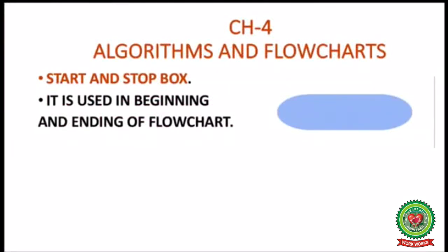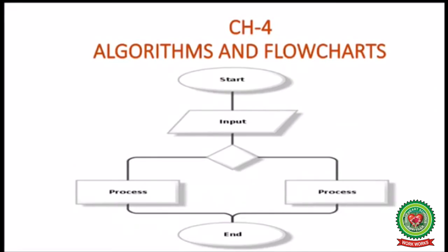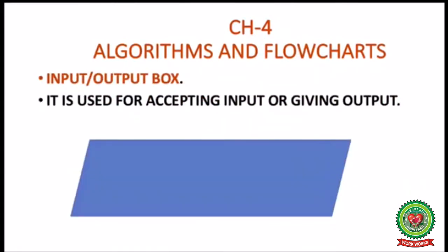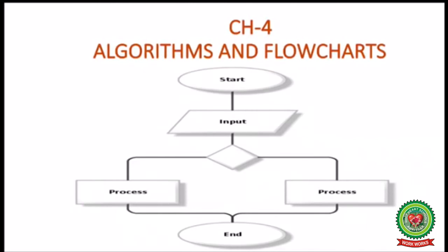Let's start with the start-stop box. It is used at the beginning and ending of the flowchart. In an example, you can see the start and stop box at the top and bottom of the flowchart with 'start' and 'end' written inside. The second one is the input-output box, used for accepting input or giving output. Here you can see we have the start box, and then an input box where we can give the input.